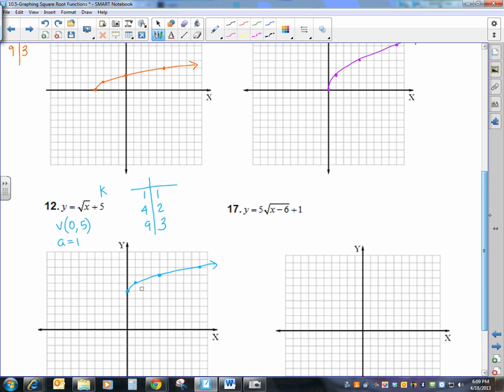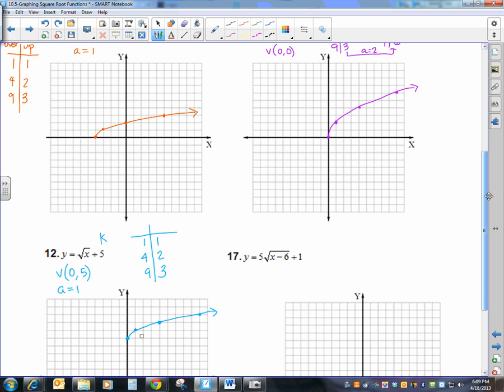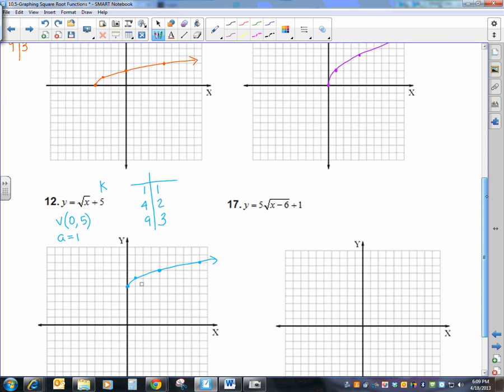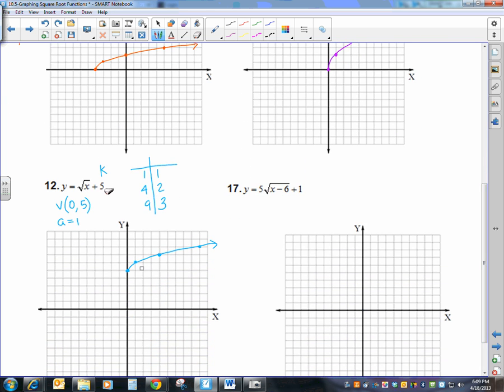So before we do this last one, I want to point out we did one change of each one. My h took my original graph and shifted it to the left. It's always the opposite when you're dealing with h. My 2 on the outside actually stretched my graph. And then k affects my y value, so it took that graph and shifted it up. So this is going to be a graph that's going to have everything in it.